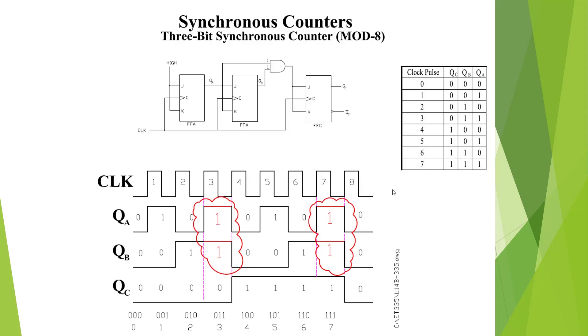This is a 3-bit synchronous counter set up for mod 8. Mod 8 means divide by 8. It's going to count from 0 to 7. And this is a standard mod 8 divide by 8.